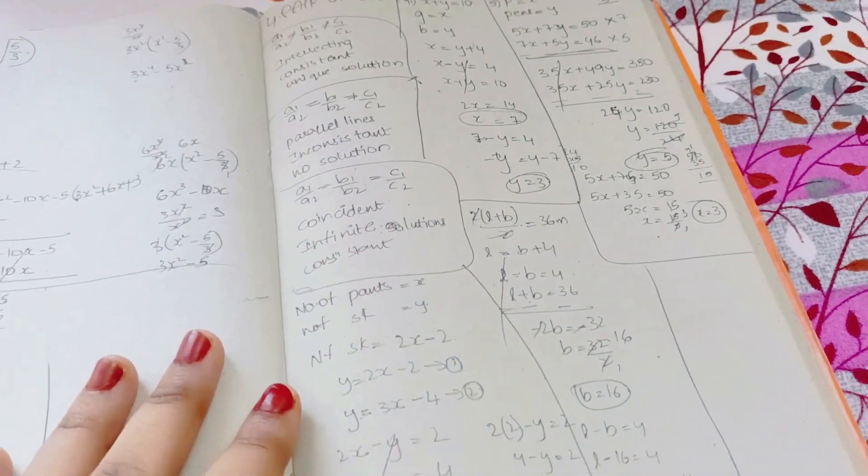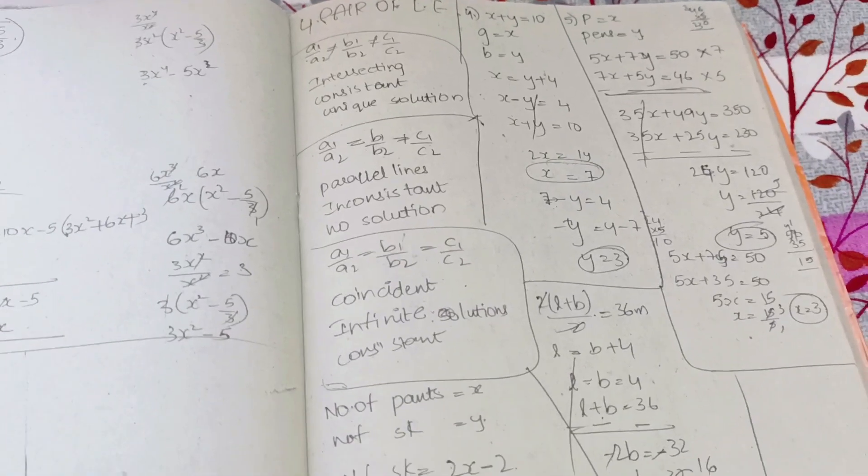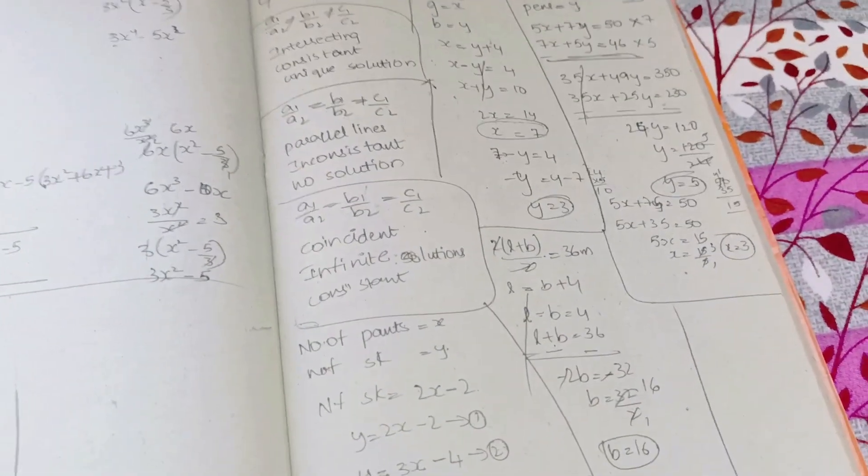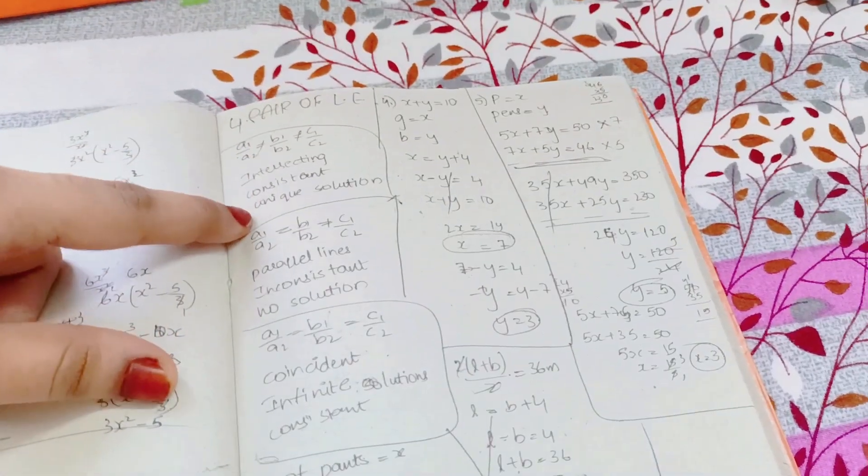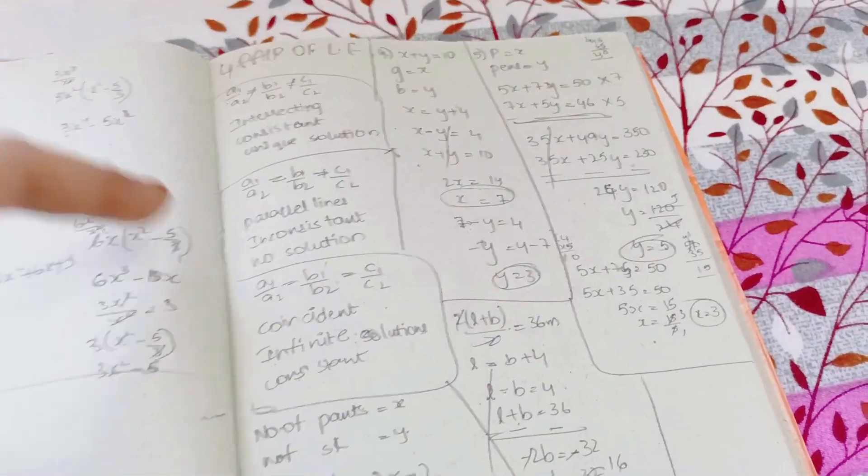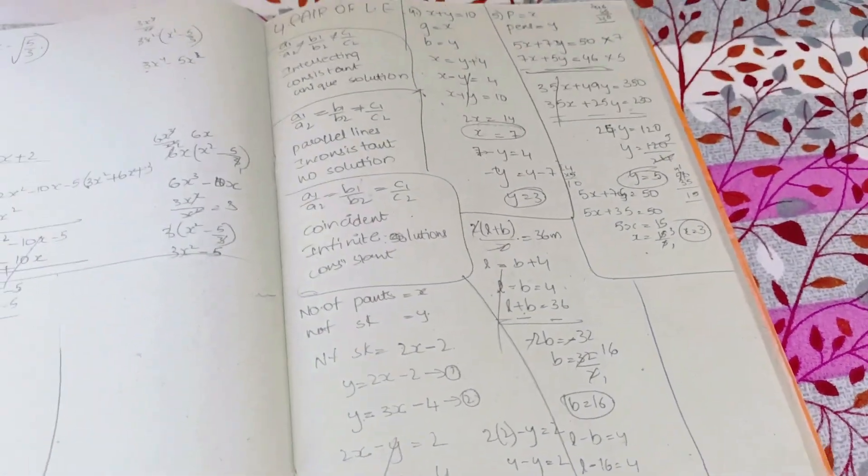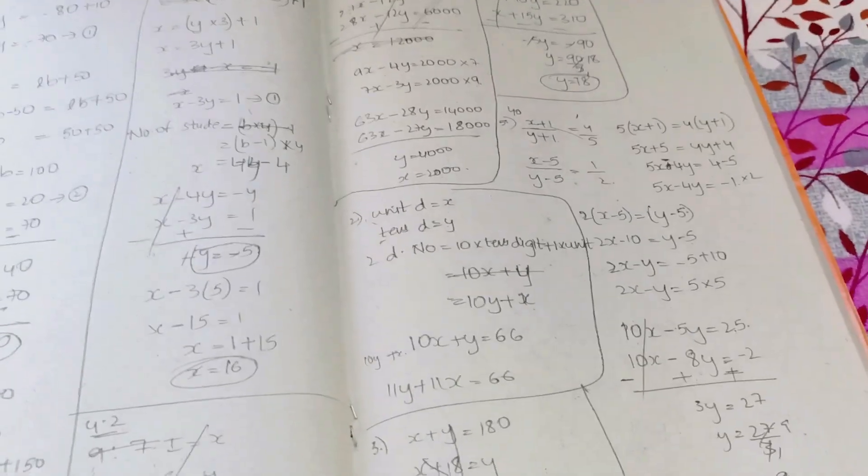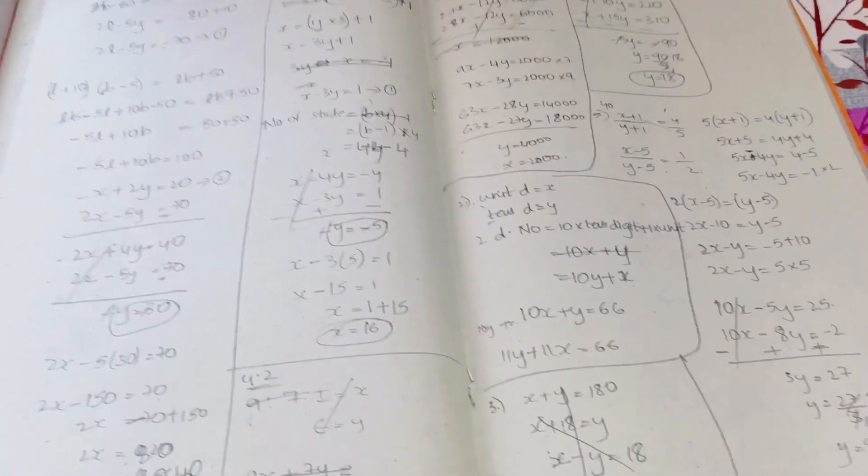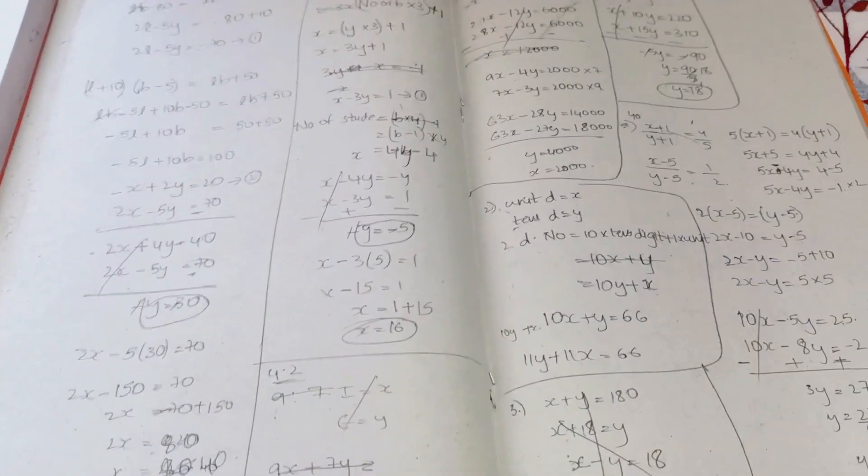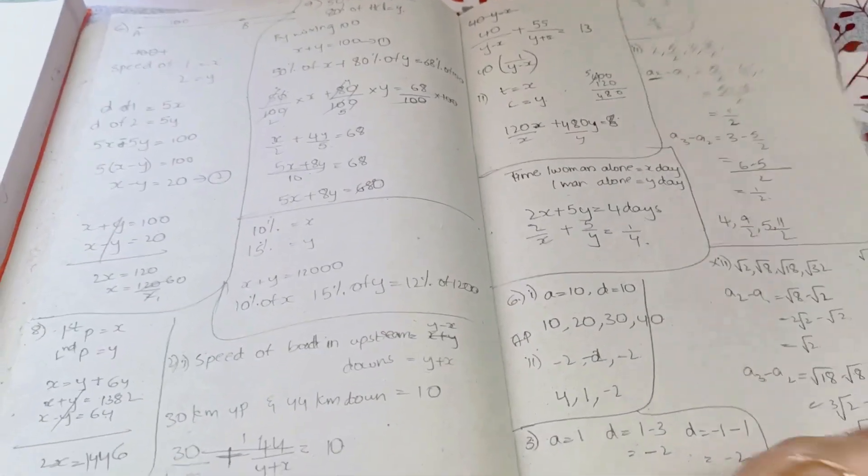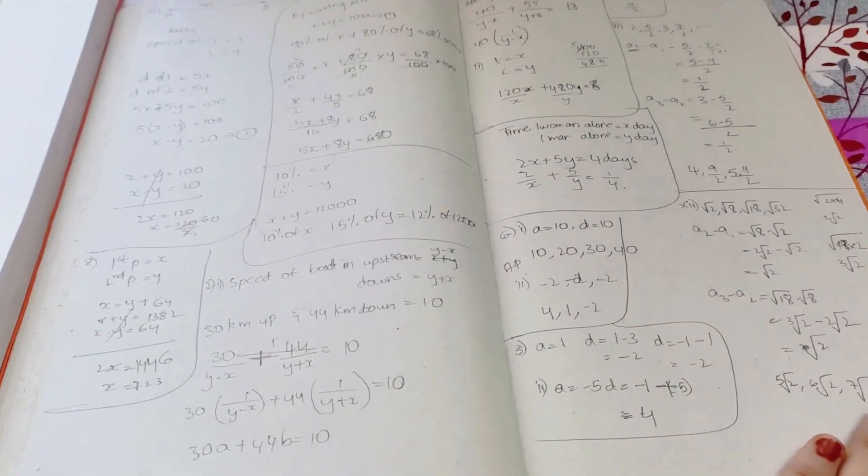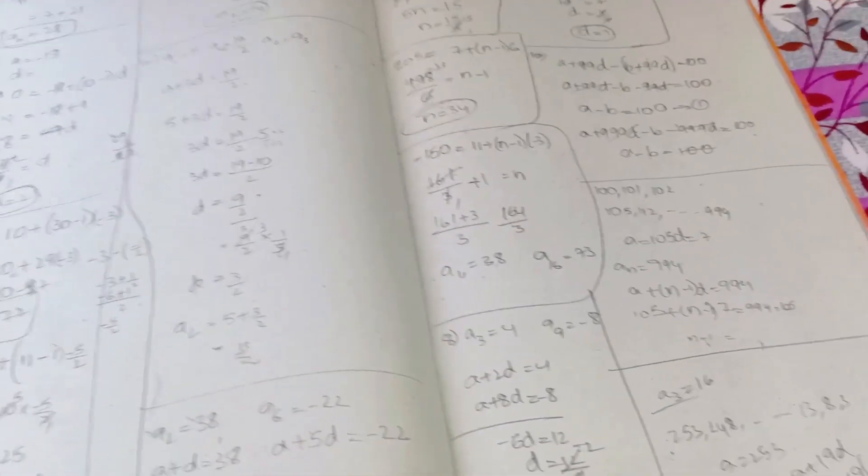Next up we have Pair of Linear Equations. In this you need to know about intersecting lines, parallel lines, coincident lines. When you're practicing now, go through each and every chapter - no need to revise theory separately. See how I practice: I put the heading, wrote the main theory points with pen, and then started the chapter. If you do like this, you'll be thorough with the concept. In between when you're doing the sums you won't get any doubts because sums are regarding theory only. Be careful with the calculations - Math is all about calculations, adding, subtracting, multiplying and dividing.